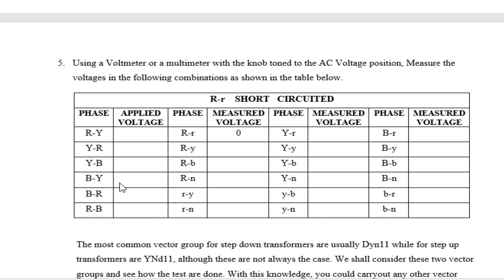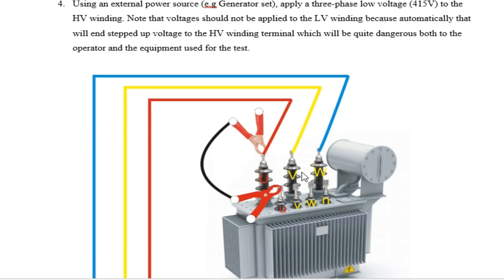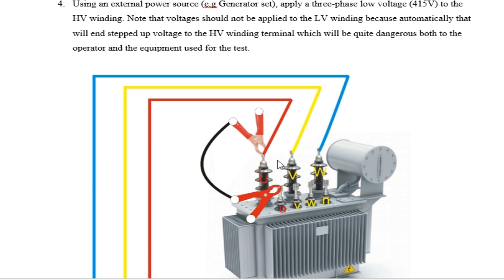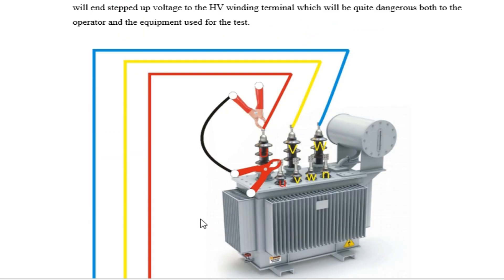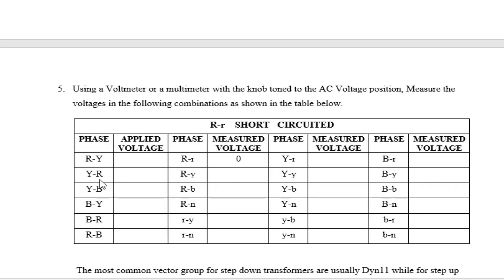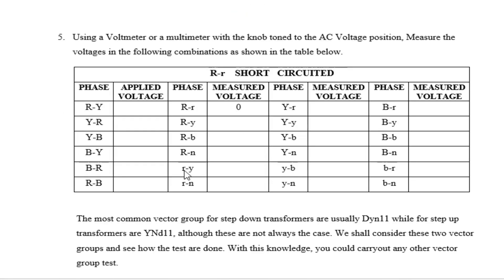On the table, the applied voltage is measured: phase voltages R-Y, Y-B, B-R from the generator side are your applied voltages. You measure R-Y, then Y-R, Y-B, B-R, R-B — all the line-to-line voltages. These are your three-phase applied voltage measurements from the generator or transformer high-voltage side.